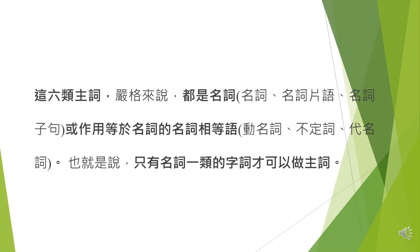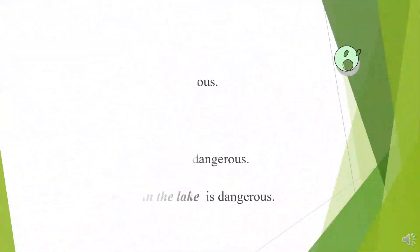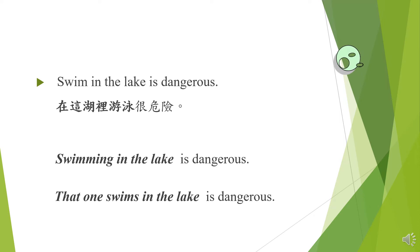整個當作這個句子的主詞，is 是動詞，fantastic 是補語。所以你可以發現，這六種常被拿來當作主詞的形式，嚴格來說都是名詞，或作用等於名詞的名詞相等語，比如說動名詞、不定詞或者代名詞。也就是說，只有名詞這一類的字詞才可以做主詞，不是名詞這一類的另外七種詞類是不能當作主詞的。接著來看同學在寫英文主詞時常犯的錯誤。